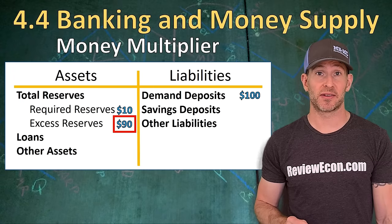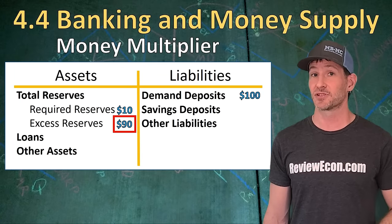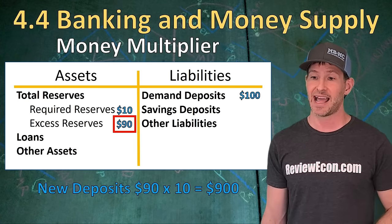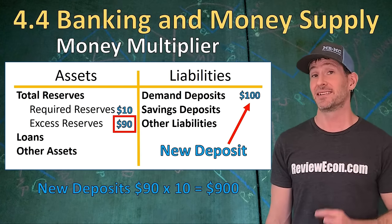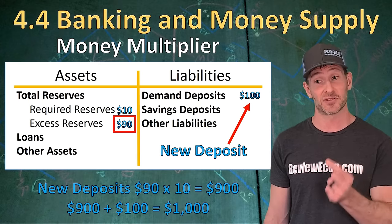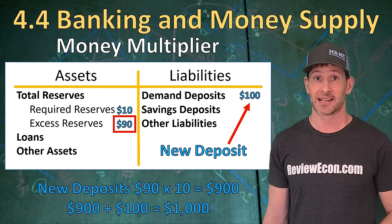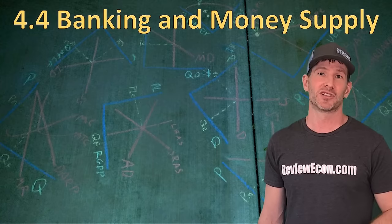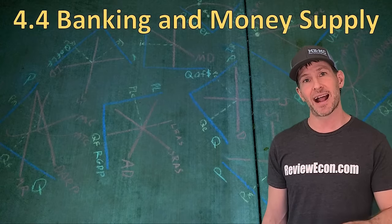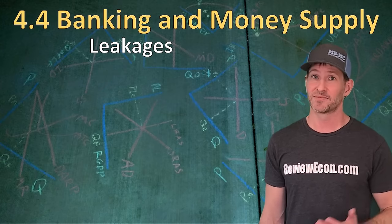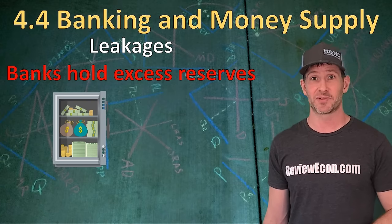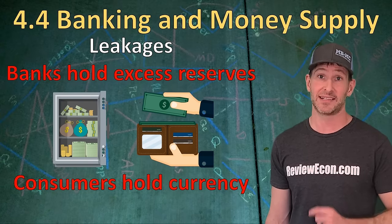If we're asked how many deposits were created, it's a little different. We take the excess reserves of $90 times 10, which gives $900 of new deposits, but then we also add in that original $100 because that was a new deposit from the start. So the total new deposits created from that first $100 deposit is $1,000. The money multiplier tells us the maximum amounts — in reality numbers will be much lower due to leakages: banks holding excess reserves rather than loaning them out, and consumers holding cash rather than depositing into banks.